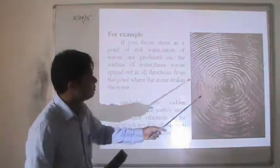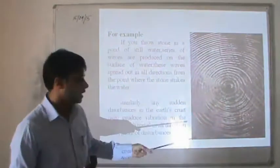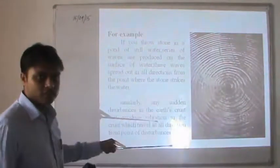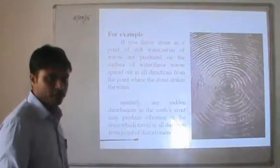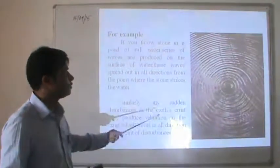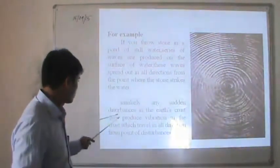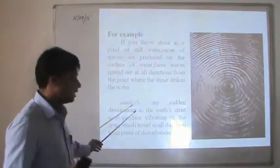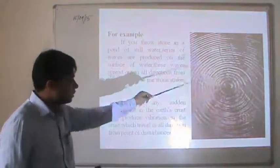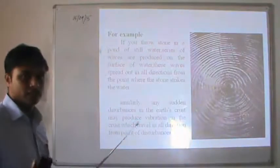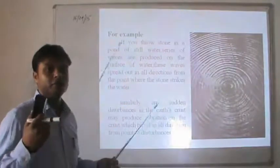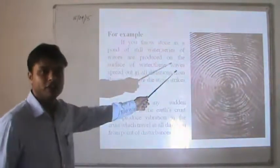For example, if you throw a stone in a pond, ripples will appear. Similarly, when an earthquake occurs at some place, there is a ripple effect where seismic waves travel outward from the focal point in all directions. Sudden disturbances in the Earth's crust produce vibrations, and this ripple-like effect occurs when an earthquake strikes.